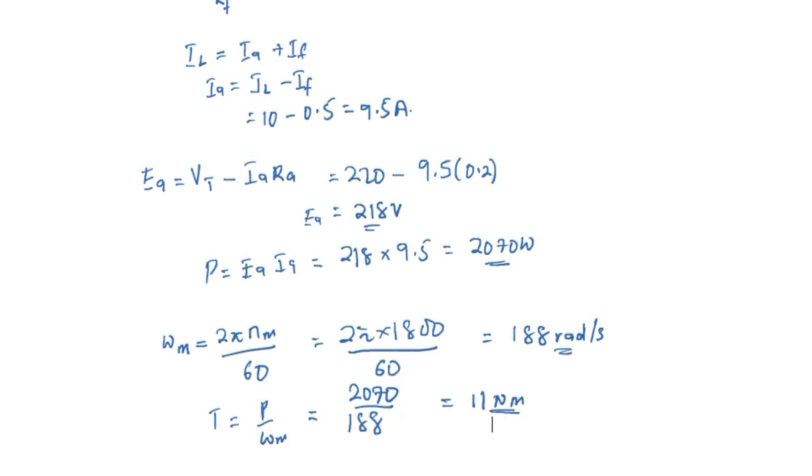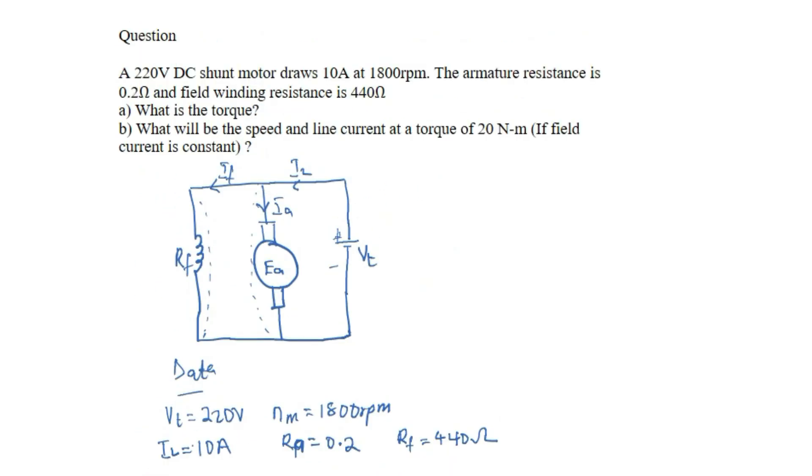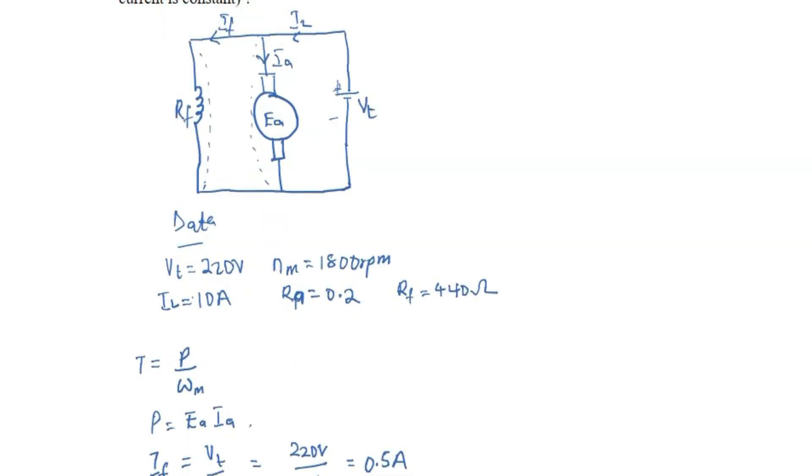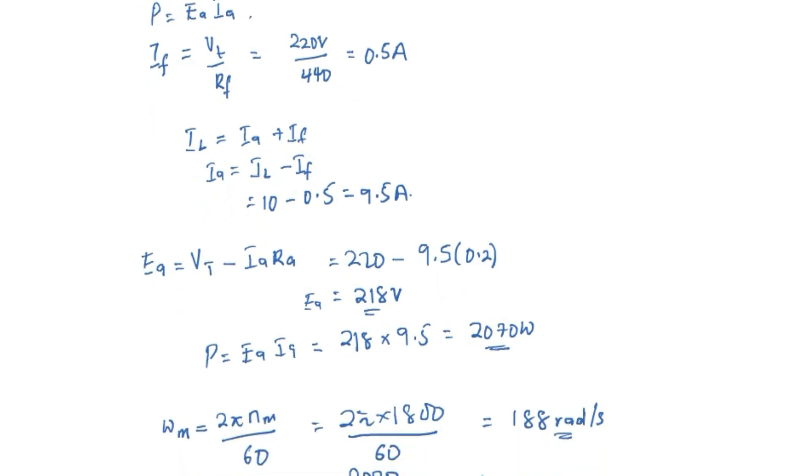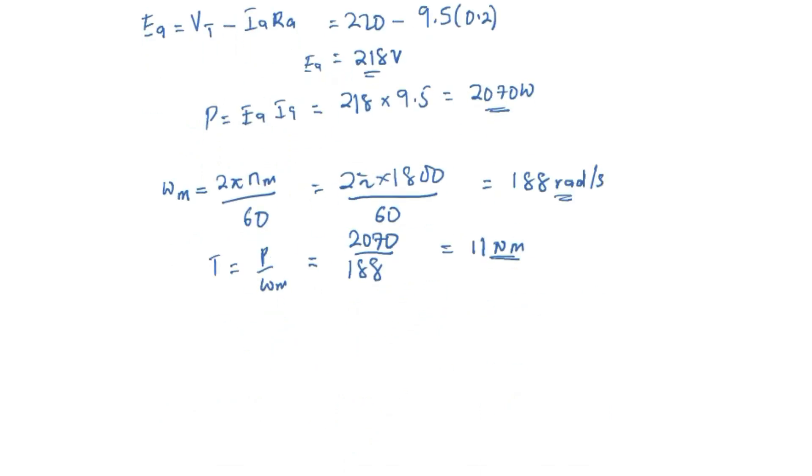Now the second part here asks us to find the speed and line current at a torque of 20 Nm if field current is constant. So if field current remain constant, that is IF will remain at 0.5 Ampere. So for the B part we know that IF is 0.5 Ampere.